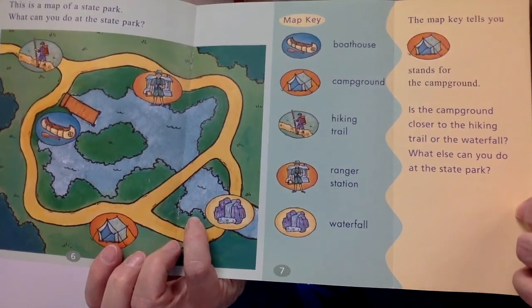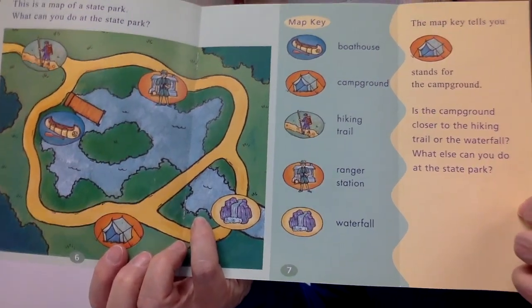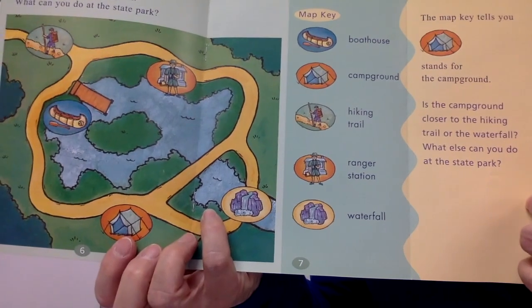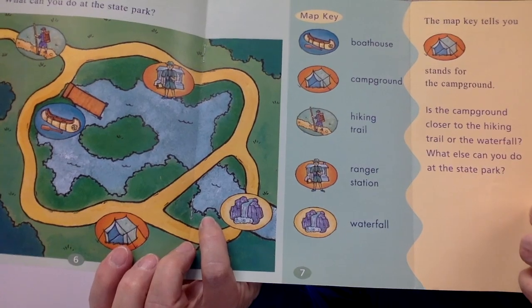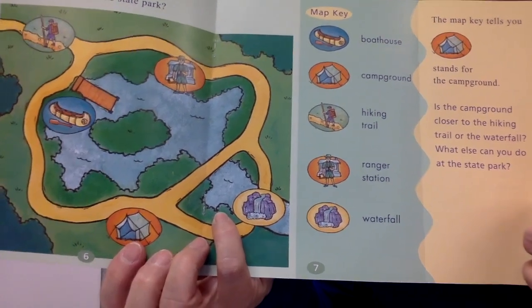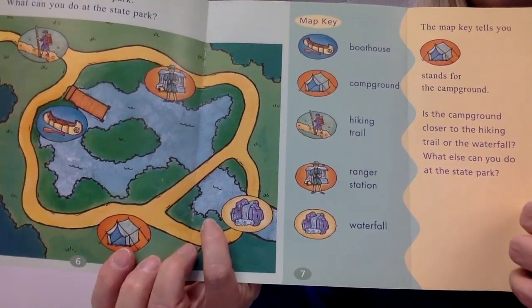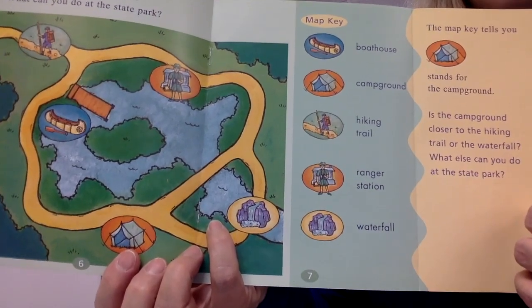Is the campground closer to the hiking trail or the waterfall? Oh yeah, if you guessed waterfall, you're right. What else can you do at the state park? There's lots of things. You can canoe. You can go on a hiking trail.